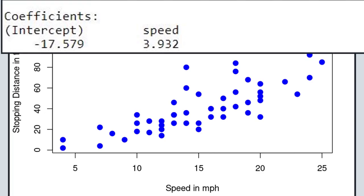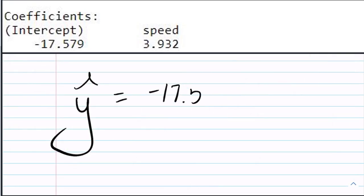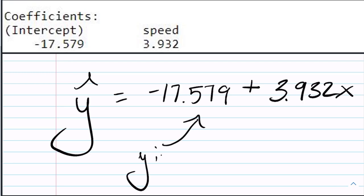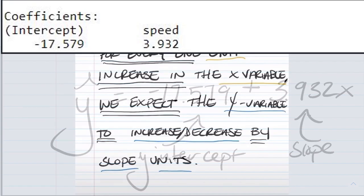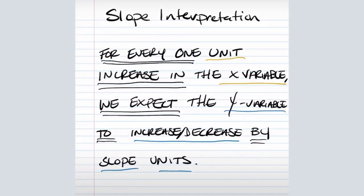Here is the output from R for the linear model. So we have y hat, which remember is the predicted value of y, and then we have a slope of negative 17.579 plus, excuse me, we have a y-intercept of negative 17.579, and then our slope is a positive 3.932 times x.